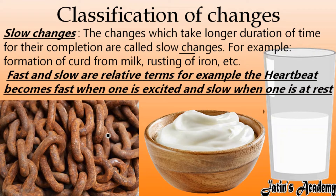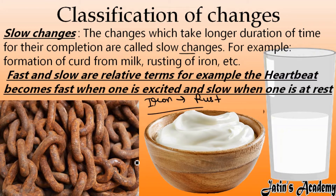Another example: if we have iron, it is not going to convert into rust within a few minutes or few seconds. Rusting of iron takes months or years to occur. So these kinds of changes which take a lot of time are known as slow changes.